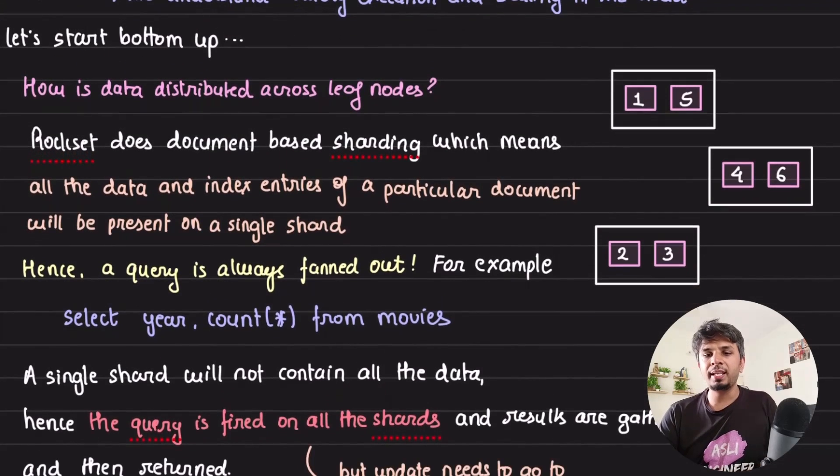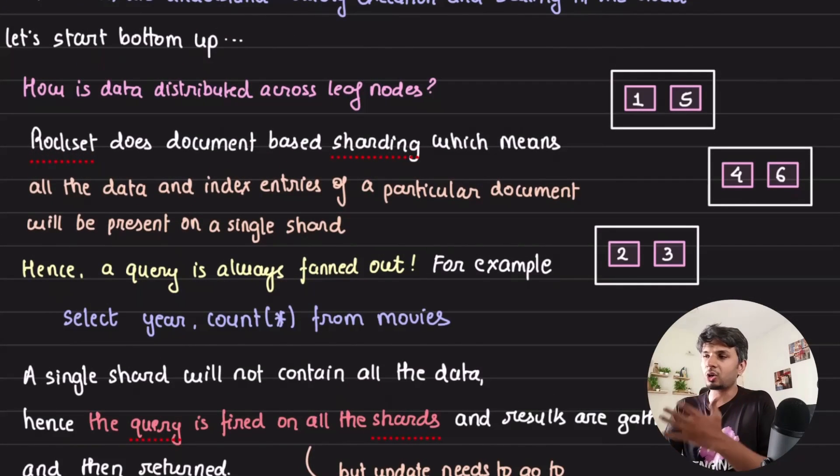The request always comes to the aggregator nodes. The aggregator nodes after getting the request speak to leaf nodes, get the data, execute it, aggregate it, and respond back. Now let's go into slightly specific implementation details.